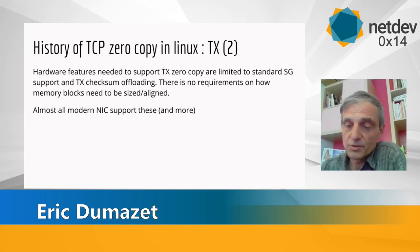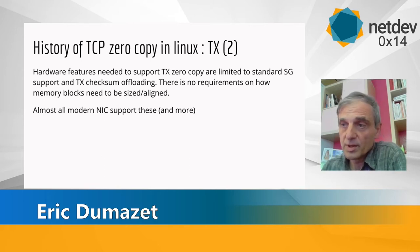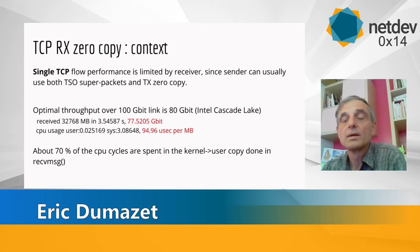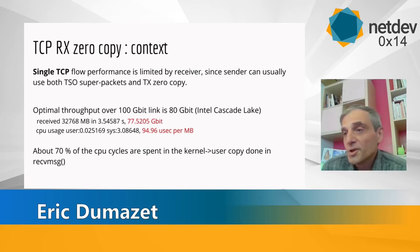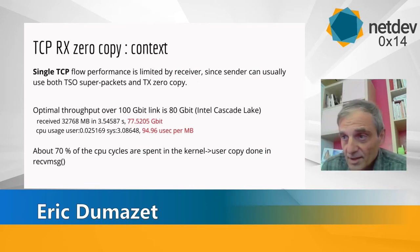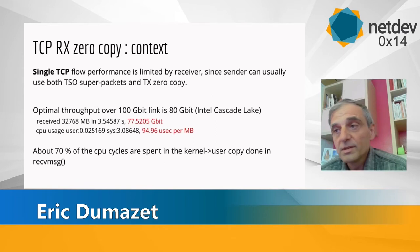The only thing you need is scatter-gather and checksum offloading. So it has been there for quite a while. A lot of NICs support zero copy on the transmit side quite easily. Now, to the topic we are handling today: zero copy on the receive side.